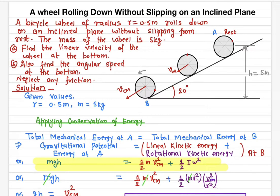In this problem, I'll talk about a bicycle wheel which is rolling down on an inclined plane. The wheel is rolling down without slipping.